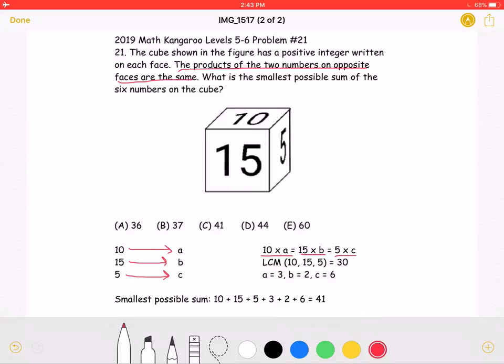The question asks for the smallest possible sum of the six numbers. We can find this by first finding the lowest common multiple between 10, 15, and 5, which is equal to 30.